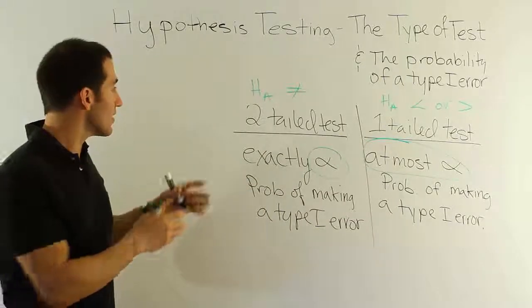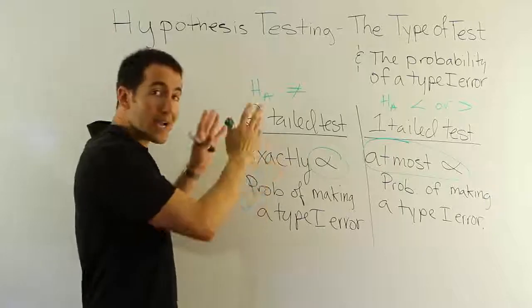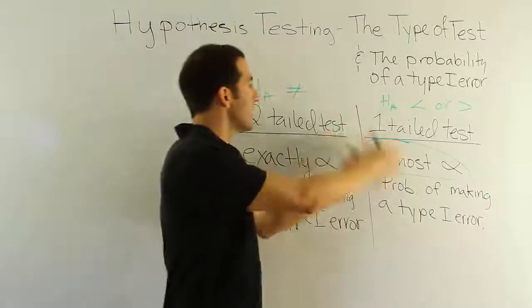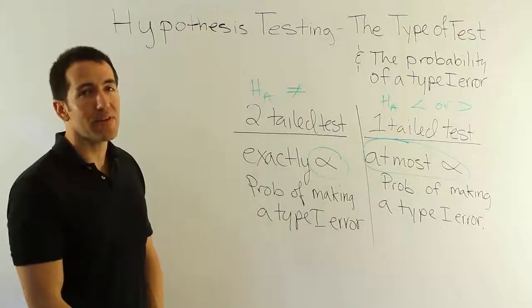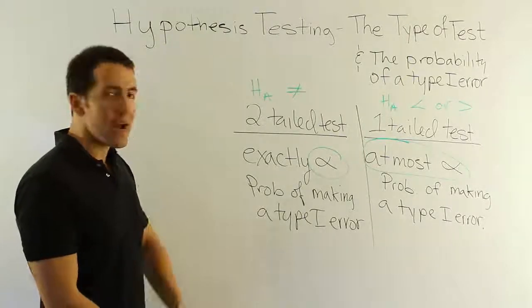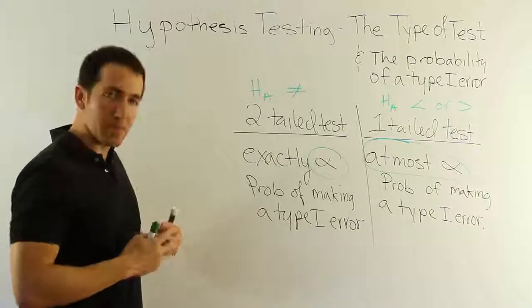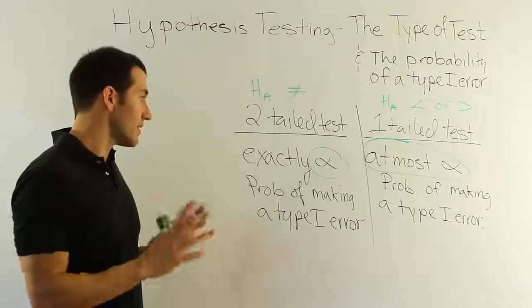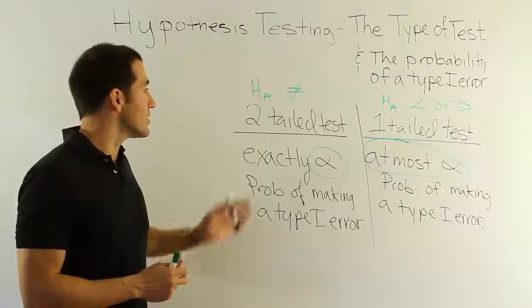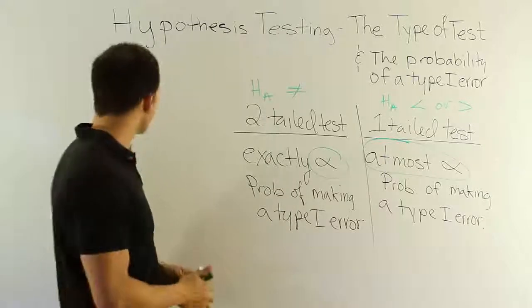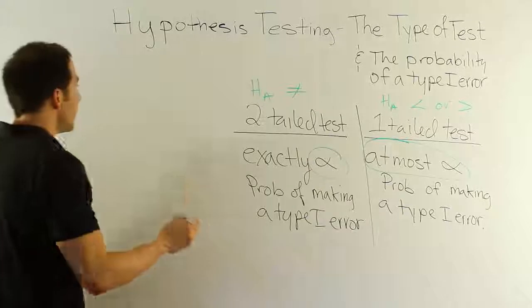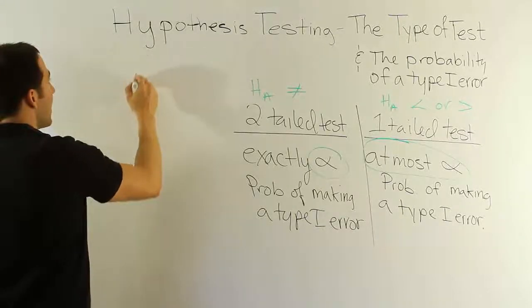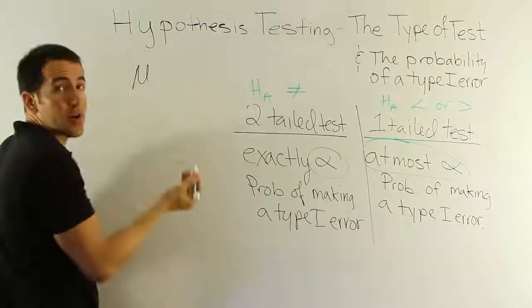Now, you may not understand why it's exactly alpha or why it's at most alpha in these scenarios. That's actually a pretty complicated thing to explain. I'm going to try now to explain this, but explain it in a way that you'll understand. If you miss it, you don't get it, it's okay. You can just memorize this. But let's try to understand it and explain it. Here's the basic idea. In a one-tail test where we're looking at the mean, let's look at our example.